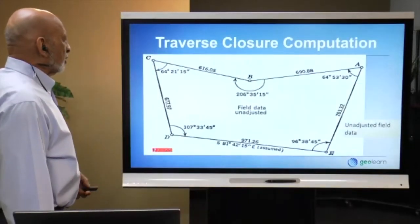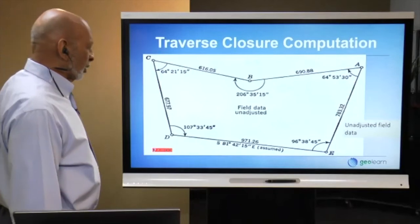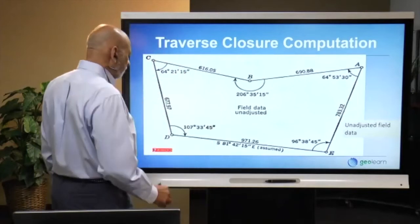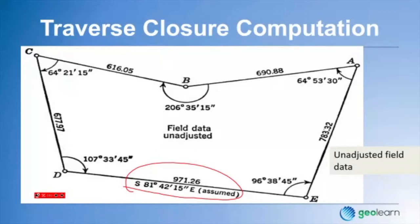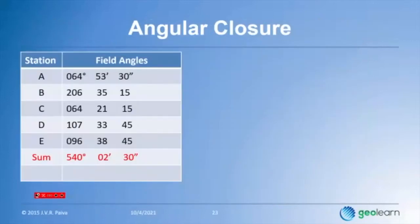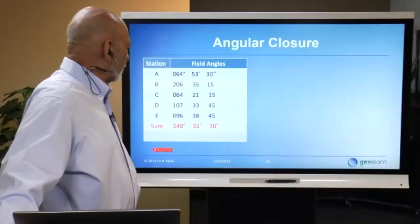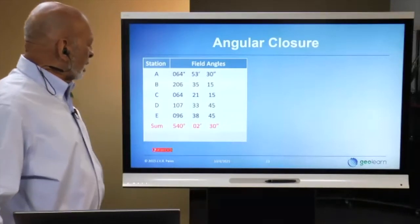Here's a traverse example with field angles, field distances, and a given bearing for one line: S 81°42'15" E. This is unadjusted data. The first step is to add up all field angles. The sum is 540°02'30". The required sum for a pentagon is (5−2) × 180° = 540°00'00". So we are over by 2 minutes 30 seconds.